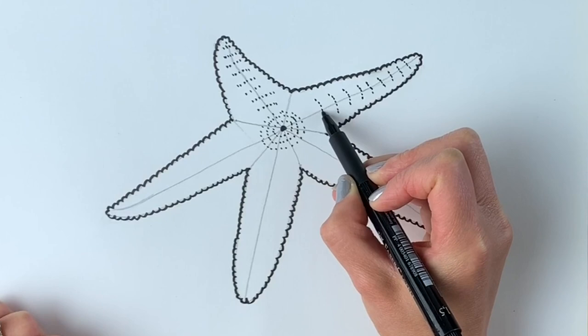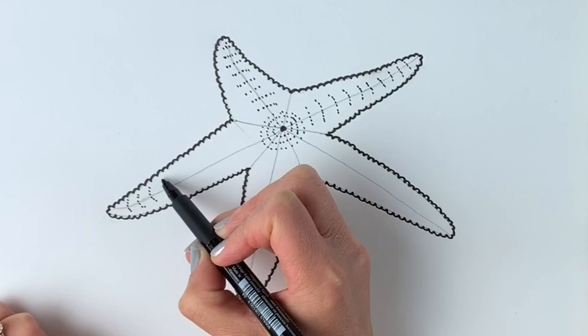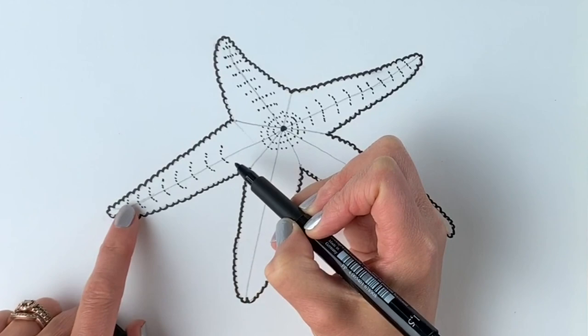And then we're going to do the same on this one. Remember to draw them slightly curved, these little dotted lines. That's just to show that the starfish isn't flat stuck on the ground. Kind of to make it look a little bit more 3D.